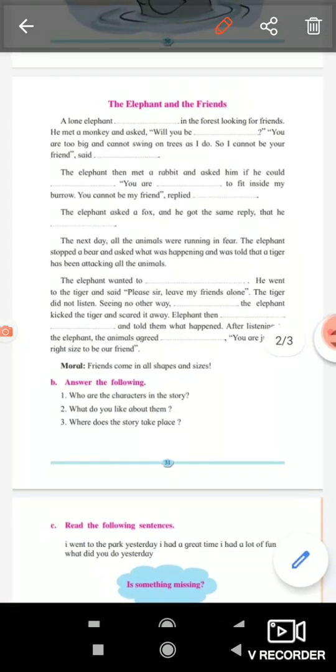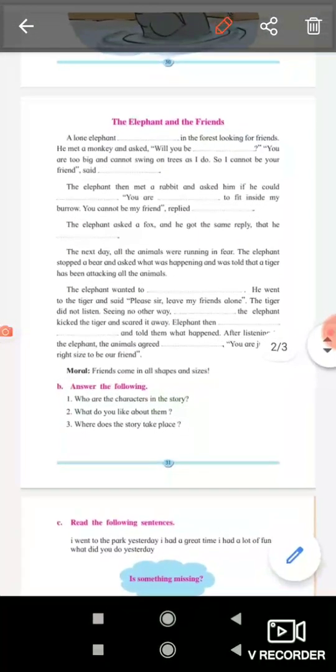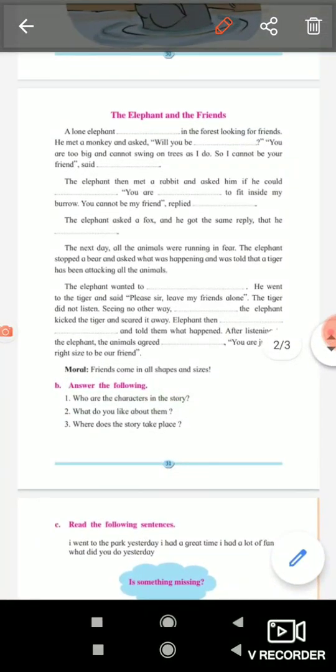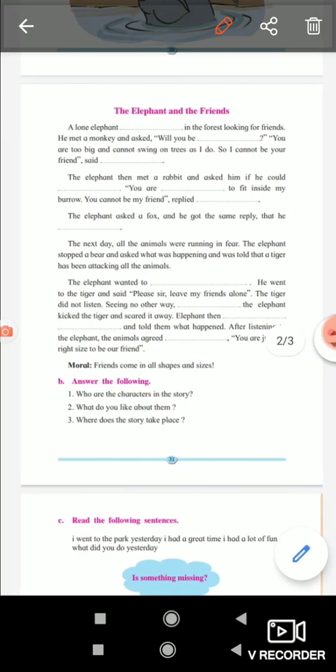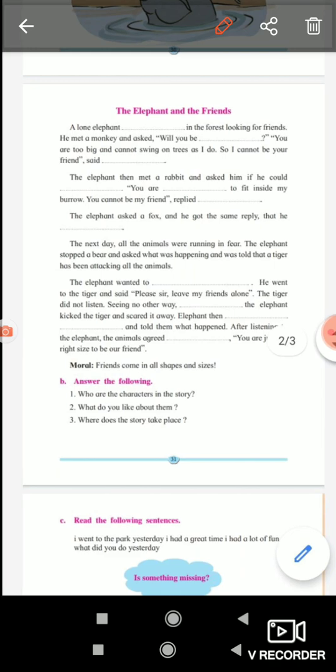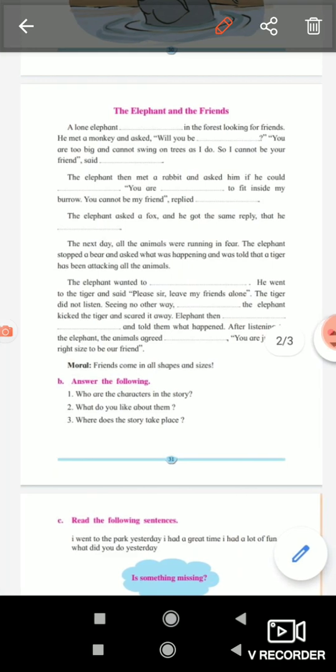Elephant then went back to the other animals together and told them what happened. After listening, the animals agreed. You are just right size to be our friend. Now what is the moral? The moral is, friends come in all shapes and sizes.